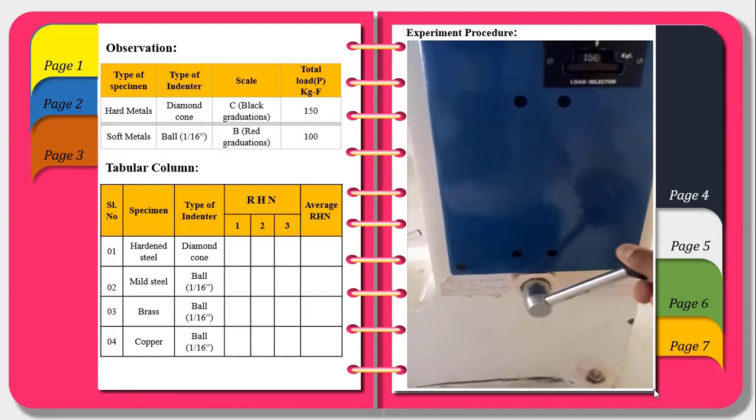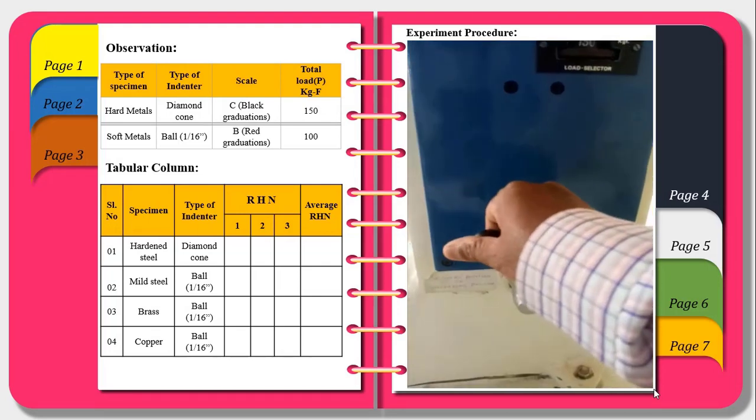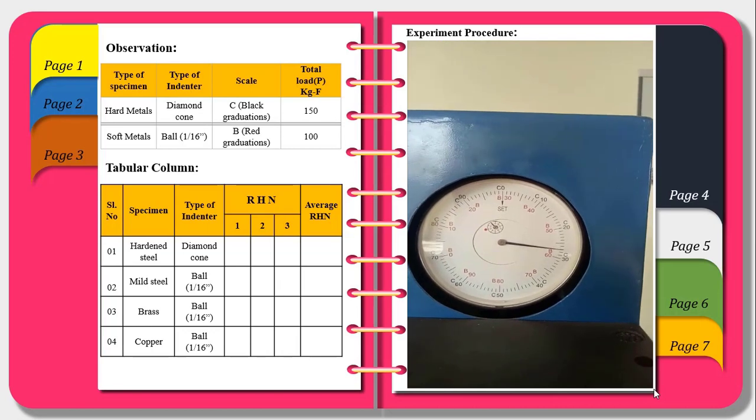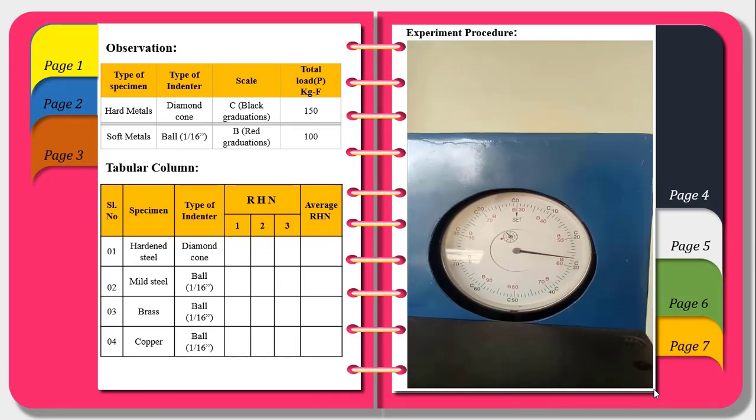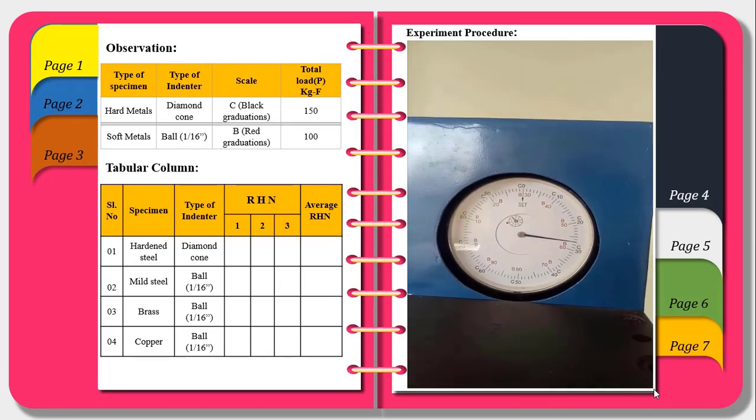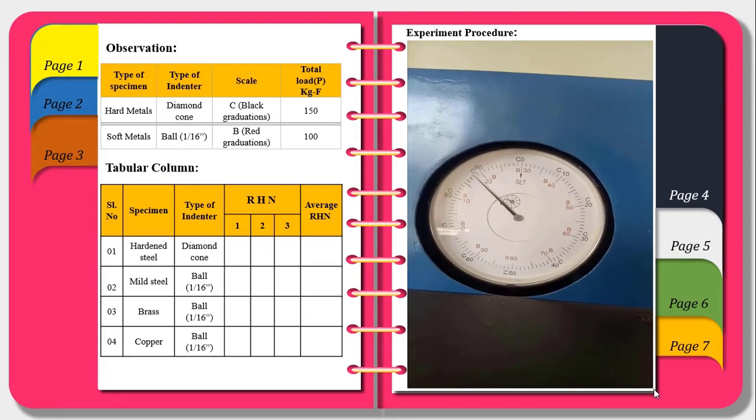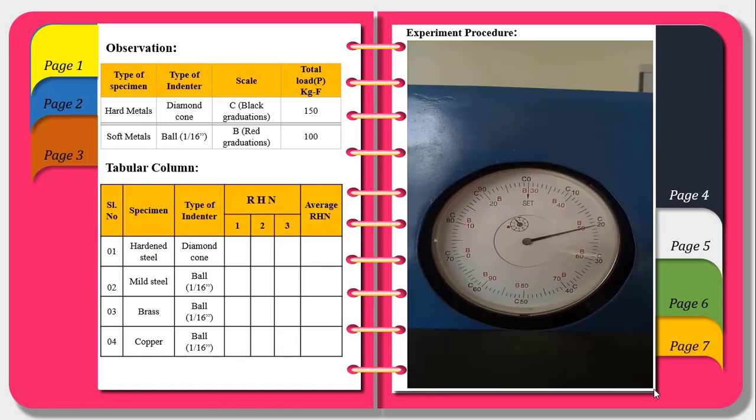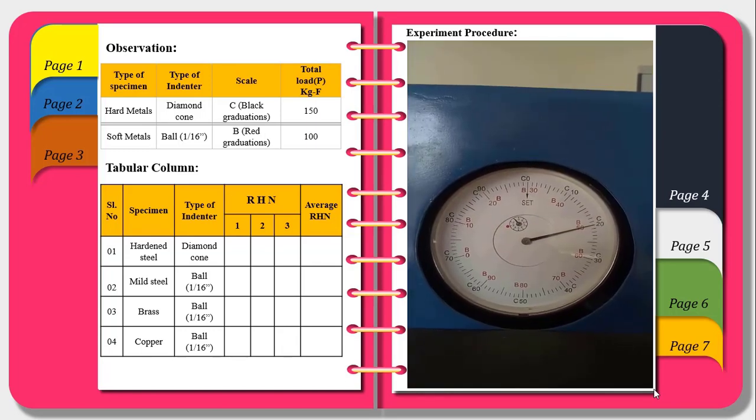After 20 seconds, slowly we have to change the loading lever from loading condition to unloading condition. Next we have to observe the dial gauge for reading for black graduations, not red graduations. And we have to continue for various trials.